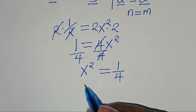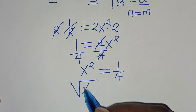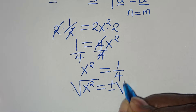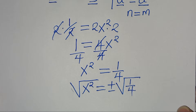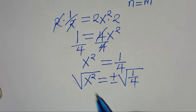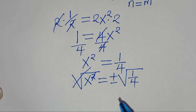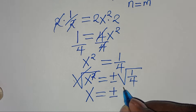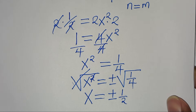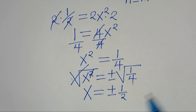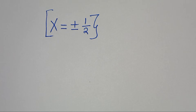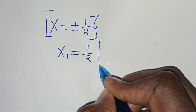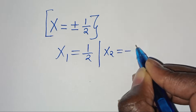We can solve for the value of x by introducing a square root on both sides, so we have the square root of x squared equals plus or minus the square root of 1 over 4. This implies that x equals plus or minus the square root of 1 over 4, which is one half. So we have two values of x: x₁ equals one half and x₂ equals minus one half.